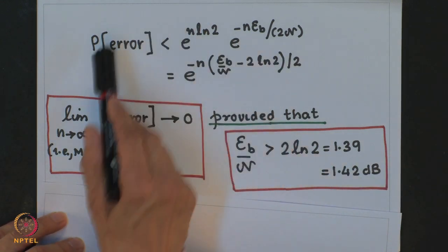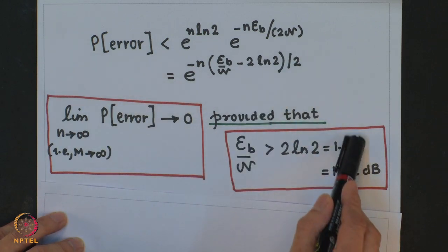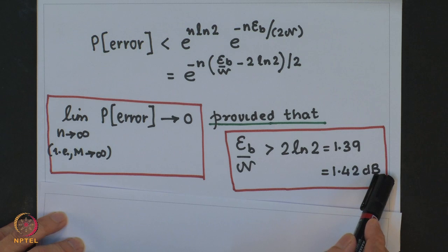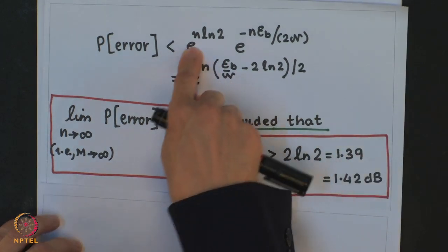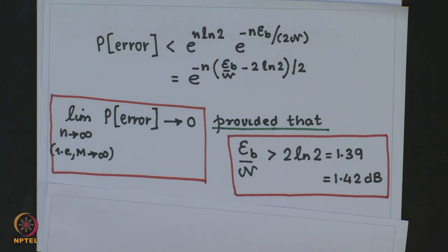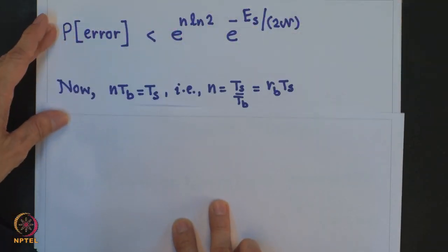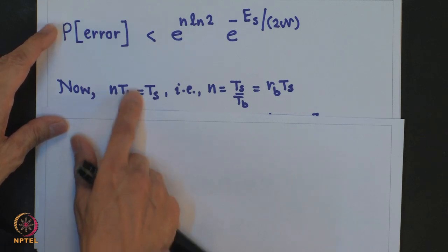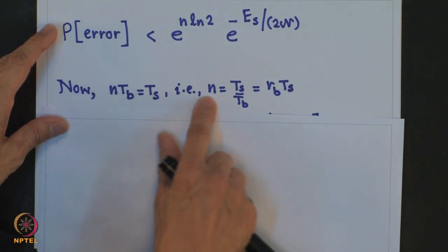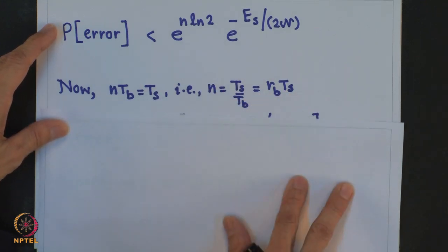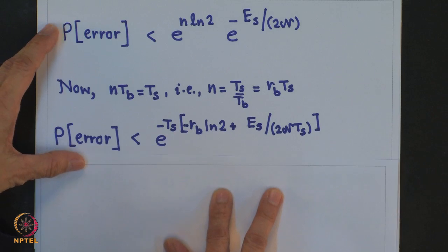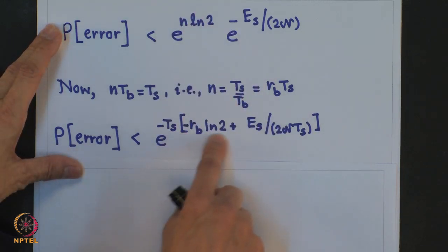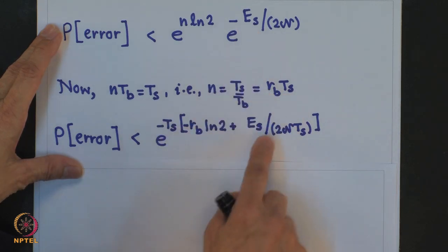This result can be interpreted differently: using the relationship N = R_b · T_s, we can rewrite N log 2 in terms of the bit rate R_b and symbol duration T_s. This shows that the probability of error tends to 0 as T_s (and hence M) tends to infinity, provided R_b satisfies a bandwidth constraint.